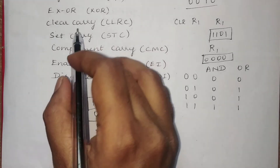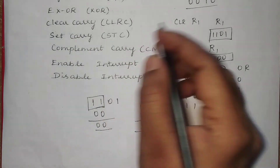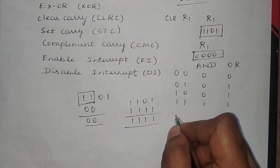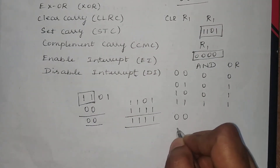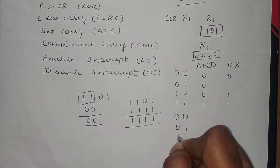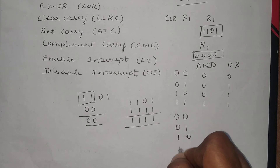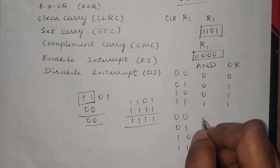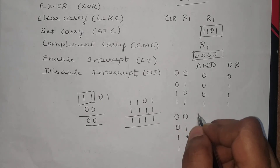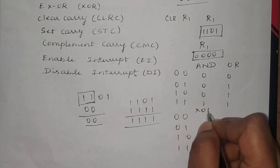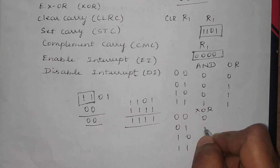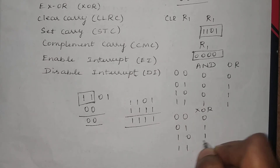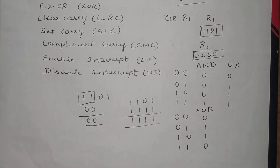The next instruction is XOR. For the XOR operation, the truth table is: if both input bits are the same, the result is 0; if both are different, the result is 1. This is how the XOR operation is performed.